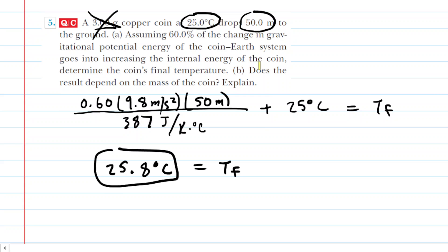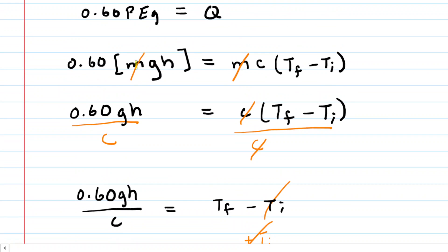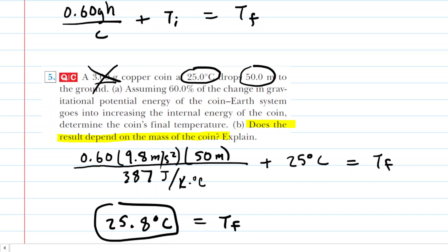In part B, we're asked if the result depends on the mass of the coin. The answer is no. When you look back at our calculation, we divided both sides by the mass M, and it canceled out. So the mass is irrelevant to the answer.